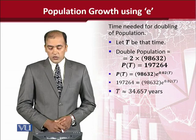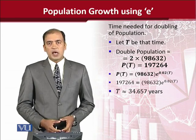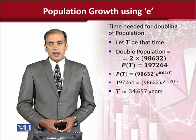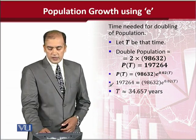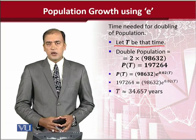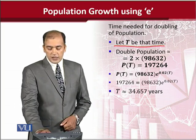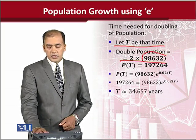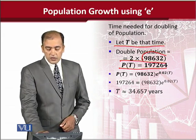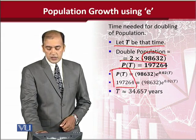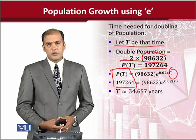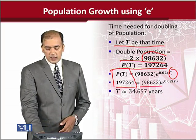Another angle of analysis could be to find time instead of population — specifically the time required for the population to get double. We assume that capital T is the time required for the population to double. The double population, compared to the initial population, would be the product of 2 and the initial population. We can put this value in the equation, replacing t with capital T, which is now the required variable.